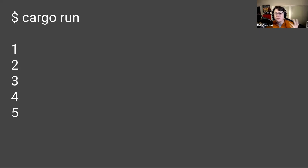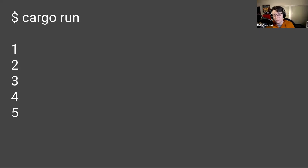Now this might seem pretty simple. Cargo — which is Rust's packaging tool, a way of managing and installing your dependencies, and running your Rust code — builds and runs this piece of code for us. But there is a lot that happens underneath the surface in the compiler when cargo is building it.